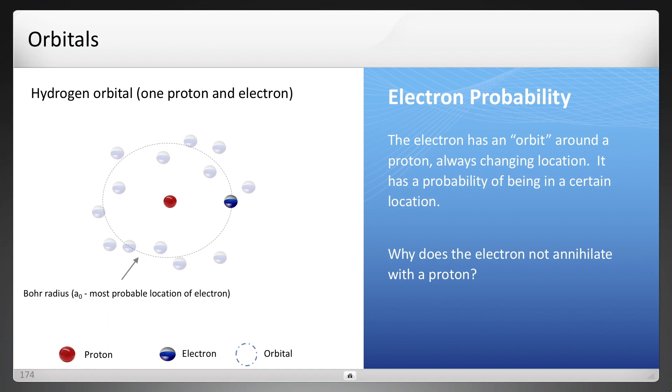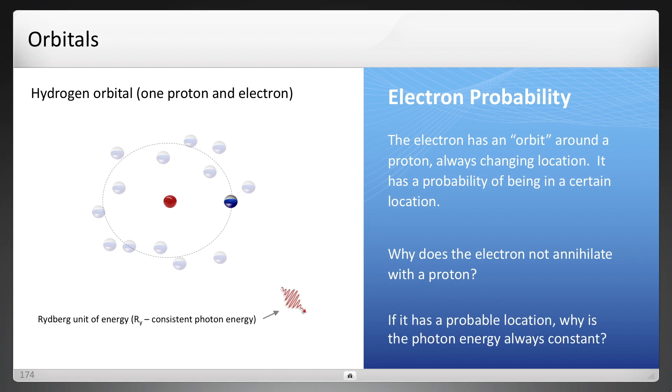But two questions here. First off, why does the electron not annihilate with the proton? Because it does with the positron. And then the second question is, why is the energy, photon energy, always constant for hydrogen, for any atom really, if the electron has a probable location?